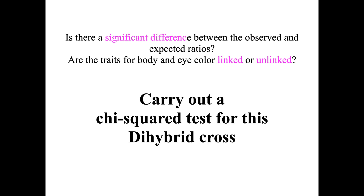Given that information, carry out a chi-squared test for this dihybrid cross and conclude whether there is a significant difference between the observed and expected ratios and whether the traits for body and eye color are linked or unlinked. So I want to go ahead and...